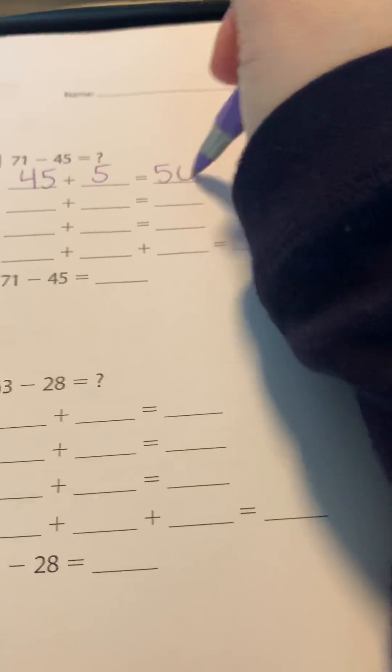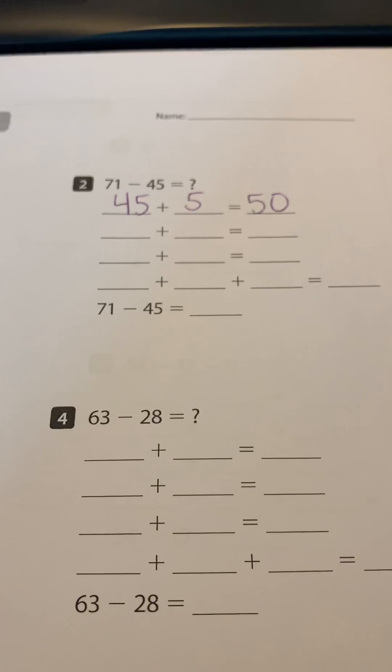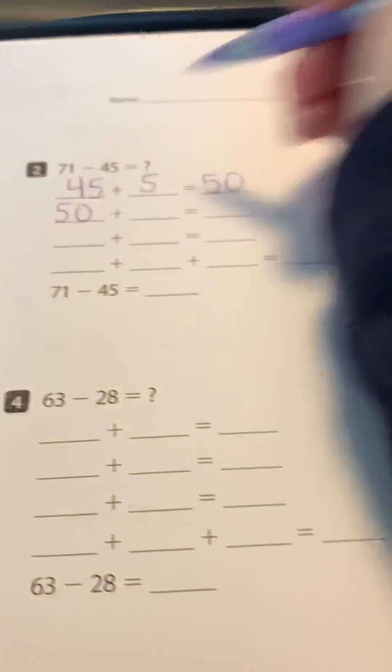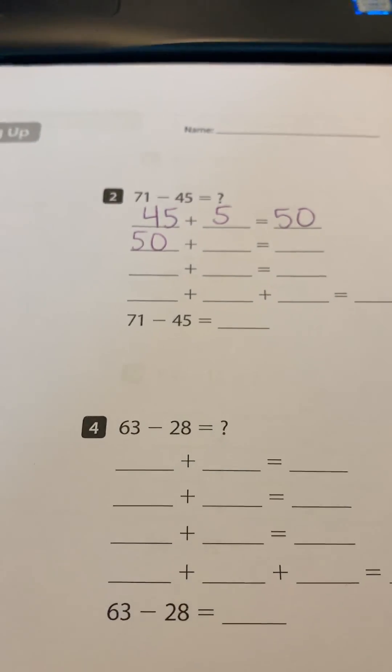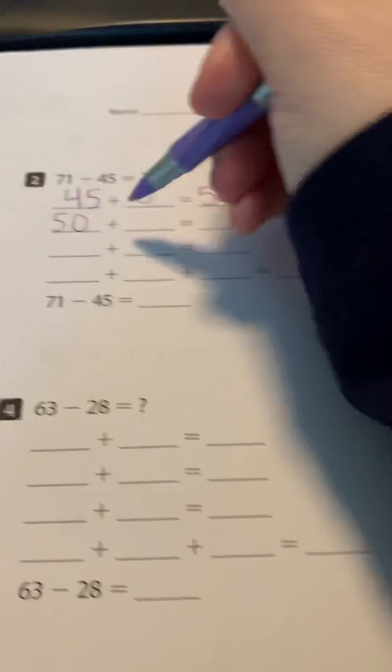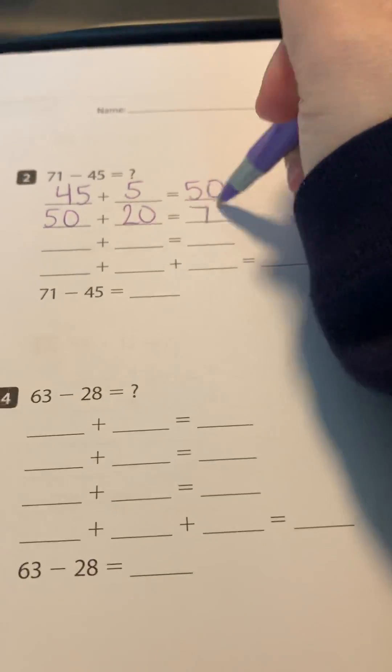Because remember, I want to work with easy numbers. We like easy numbers in math. Then I have 50 now, so I want to think what could I add to make another easy number? So I might add 20 to get to 70.